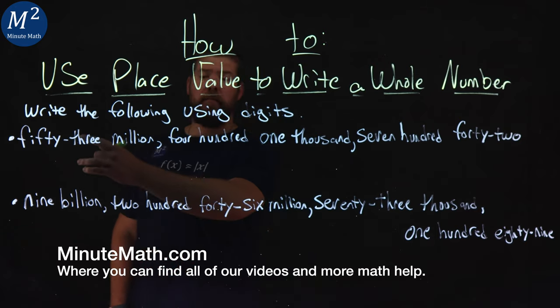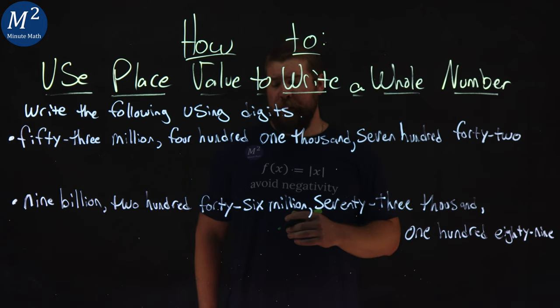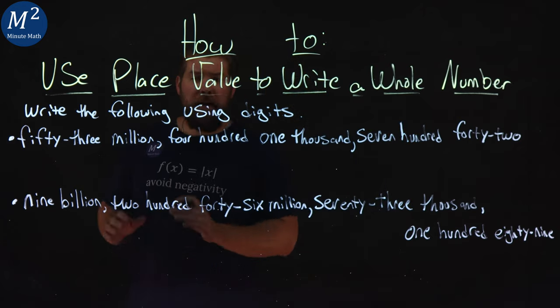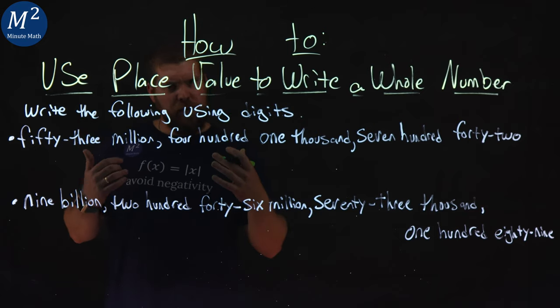Our first one here is 53,401,742. The way I like to do this is break apart each part individually, and then we combine it together at the end.